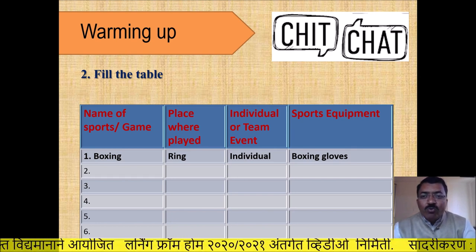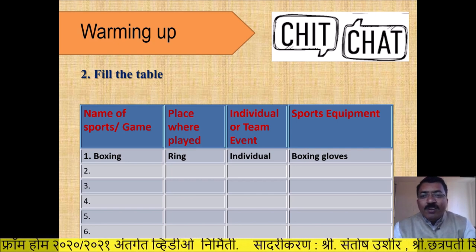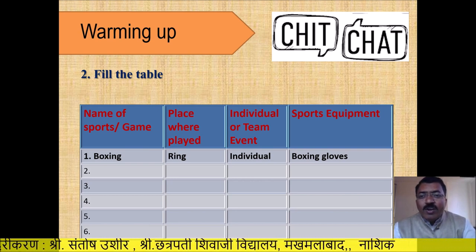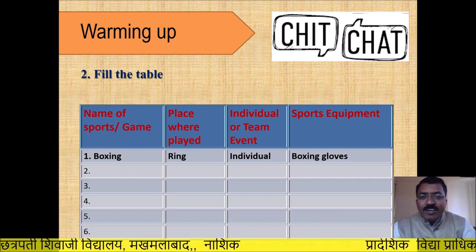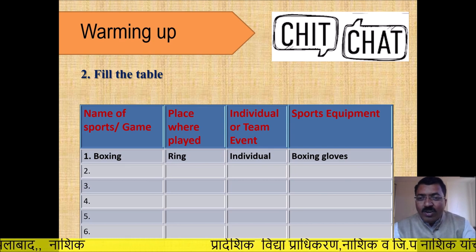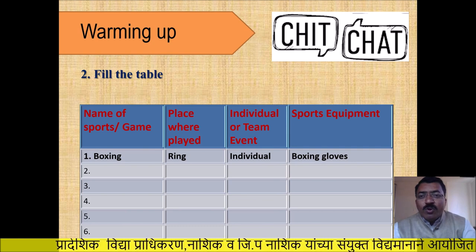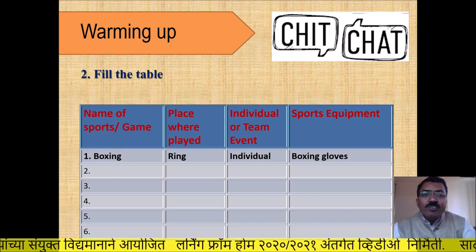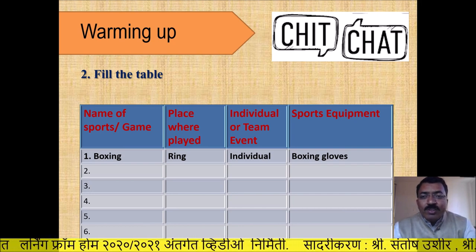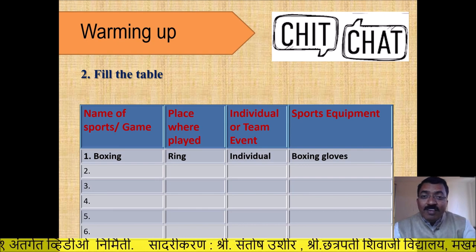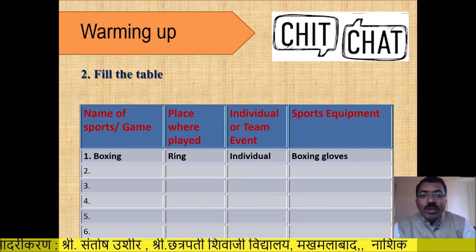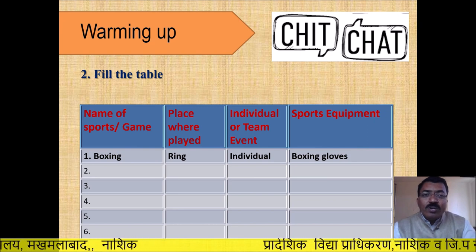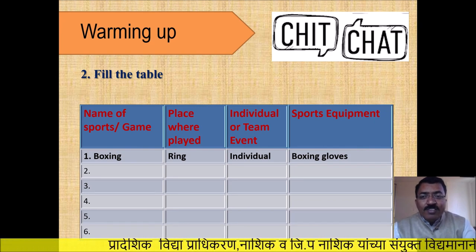The table is given here. What you will have to do is fill the table with the given information. The first one is already done for you. The columns are: name of the sports or game, place where played, individual or team event, and sports equipment.